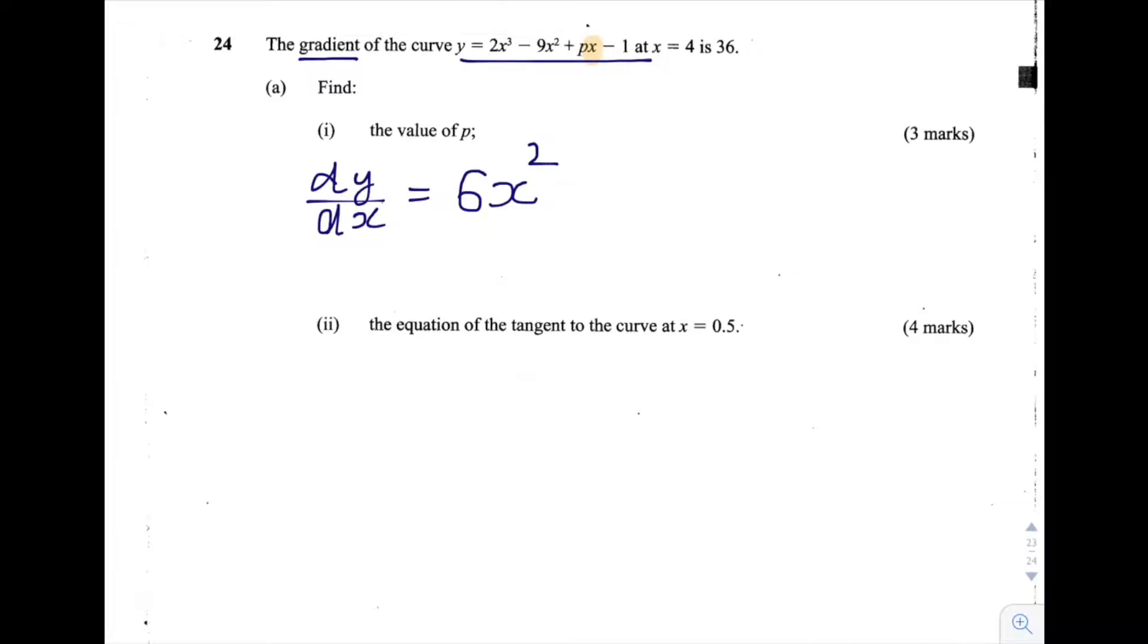And minus 9x squared becomes minus 9 times by 2, that's minus 18. x squared divided by an x, so decreased by 1, the exponent by 1, that's just x.